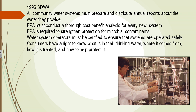The Safe Drinking Water Act reviewed everything the EPA had done and added further regulations, all to protect all Americans. The EPA must conduct a cost-benefit analysis for every new community water system. They needed to protect the public from microbial contaminants and ensure training for all workers. Americans also gained the right to know what is in their water, where it comes from, how it is treated, and how they can help protect it.